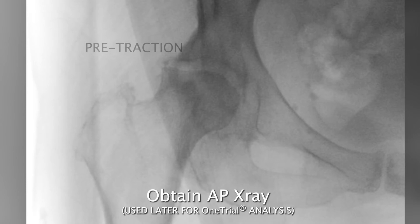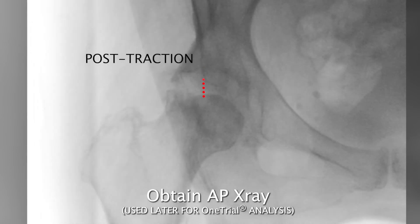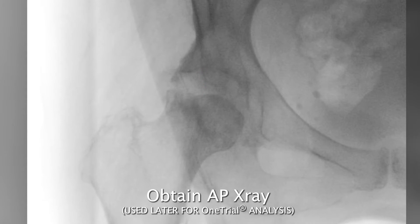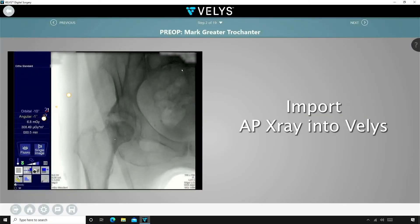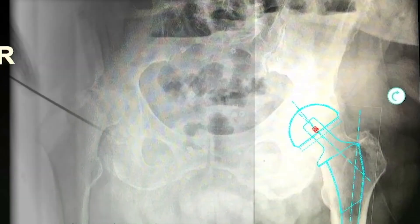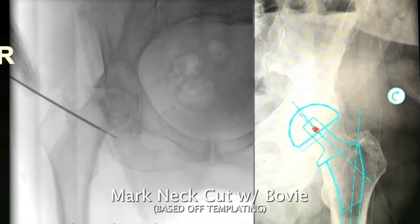My approach to these patients is to reduce the joint by applying axial traction to the operative leg. The femoral head is now reduced in its pre-collapse position. I use this image for my one trial analysis later in the case. I want to add up to 1 to 3 millimeters of length to her leg for stability. I used the templated image in surgery to verify the level of my neck cut.